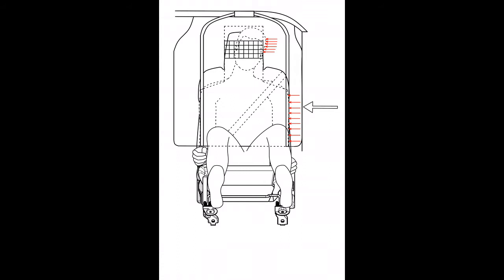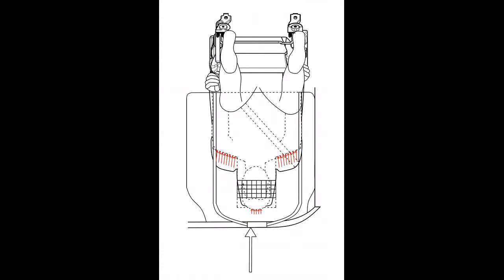These airbags also surround the neck and head of the occupant and prevent the head from being thrown around at the time of the incident. In the event of a car rollover, these airbags, by applying pressure on the shoulders of the passengers, cause more of the passenger's weight to be applied on the shoulders, with much less pressure on the passenger's head and neck.